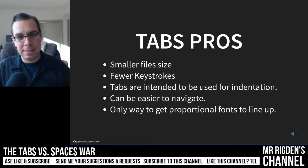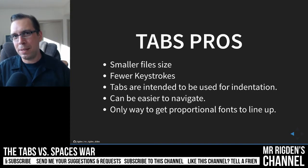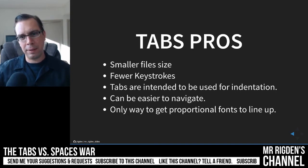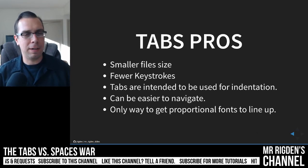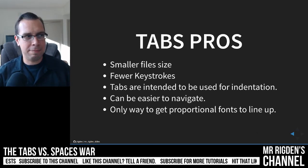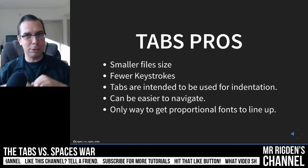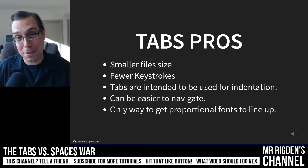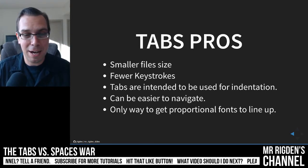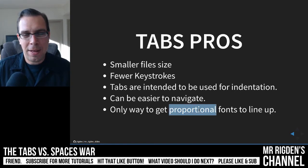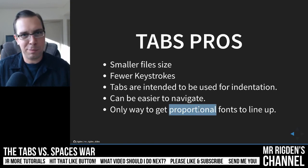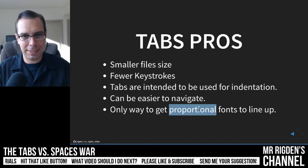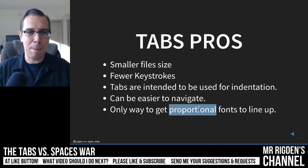The last small point is that tabs can be the only way to get things to line up properly if you're using proportional fonts. But I would say don't use proportional fonts in code. Use a monospace font. I don't know anybody that uses proportional fonts in code — but if you are, this is a really good argument for tabs. Otherwise, use a monospace font; you're going to be a lot happier.